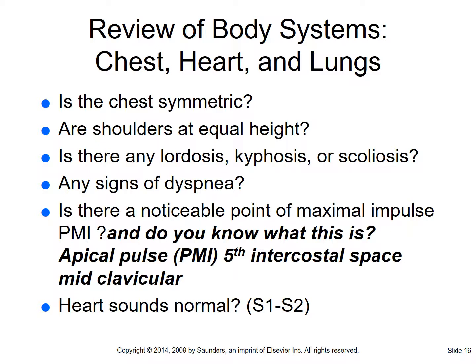For the neck: have them shrug the shoulders to assess shoulder strength. Look at the trachea - is it midline, or is it off to one side? Check for a large lump - a goiter could indicate a thyroid issue. You're also going to palpate the carotids for pulses - one at a time, because doing both simultaneously blocks blood flow to the brain. We're looking for strength and regularity of the pulse.